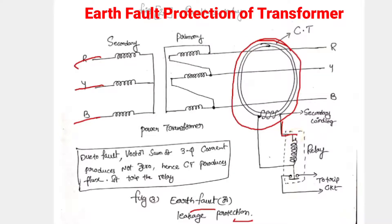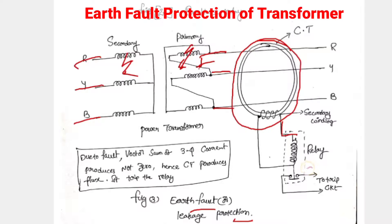It is similar to differential protection. If any fault occurs in the primary winding or secondary winding — whatever the fault may be, including earth fault — the vector sum of the three-phase currents becomes unequal, not zero. Hence, the CT produces a flux, forcing the relay coil to trip. The relay coil is connected to the trip circuit.